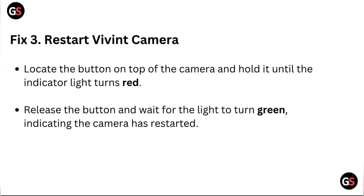Fix three: reset the Vivint camera. Locate the button on the top of the camera and hold it until the indicator turns red. Release the button and wait for the light to turn green, indicating the camera has restarted.